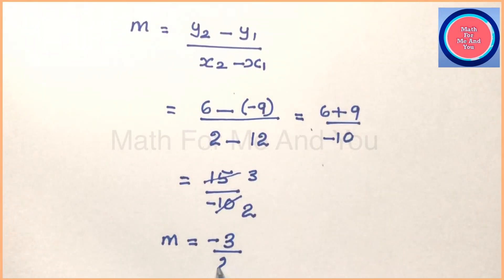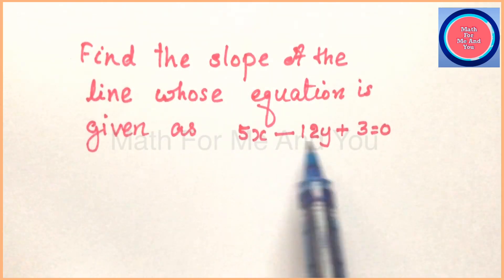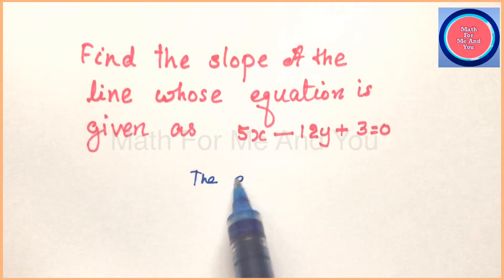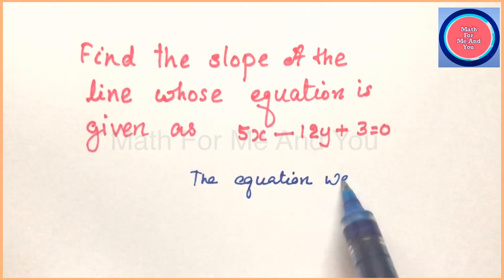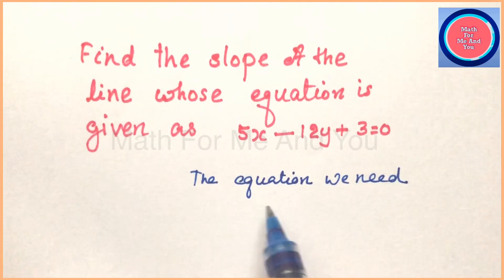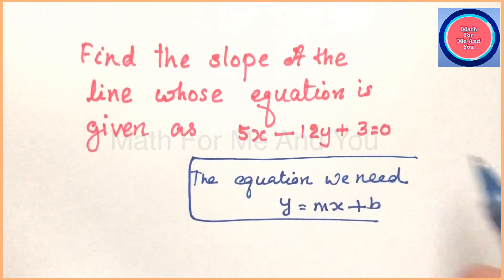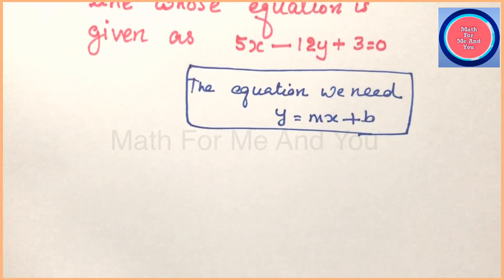Now the second question: find the slope of the line whose equation is given as 5x minus 12y plus 3 equals 0. Here the equation of a line is given. If the equation is given, we will reduce this equation to slope intercept form, which gives us slope quickly. So what is that equation? The equation we need is of the form y equals mx plus b, and its name is slope intercept form.